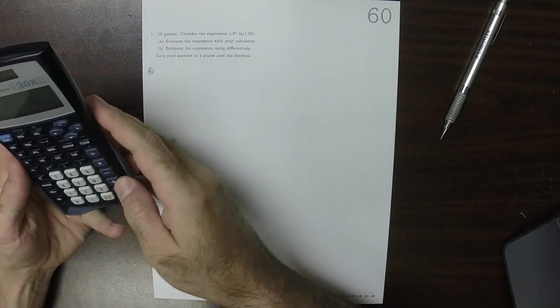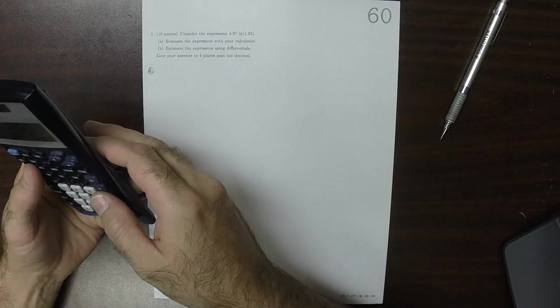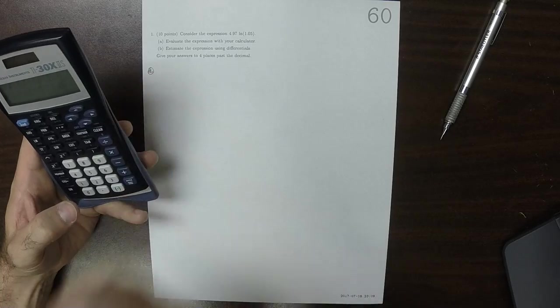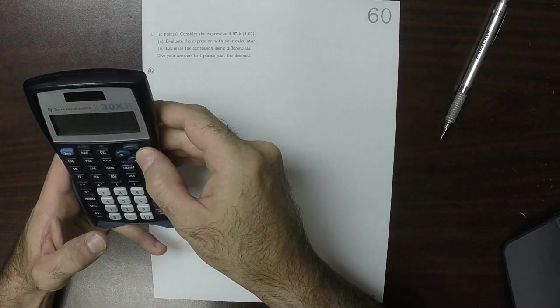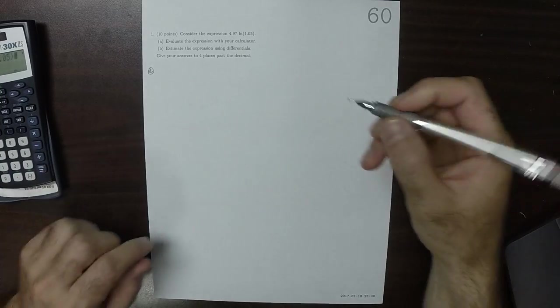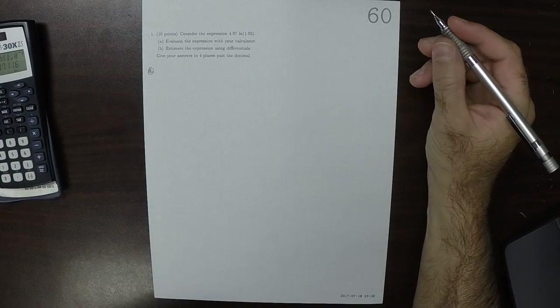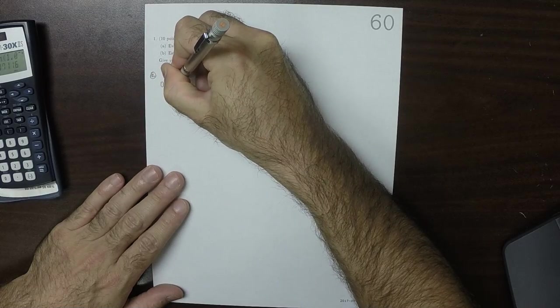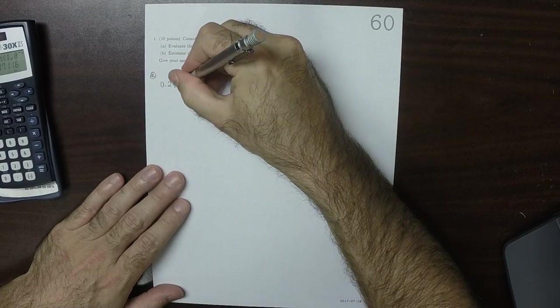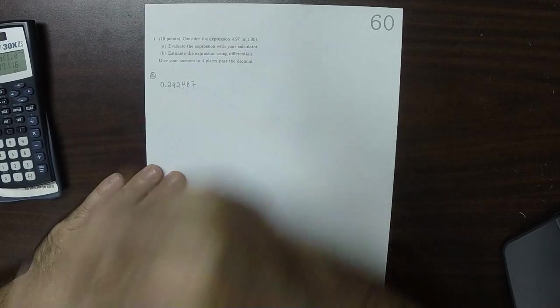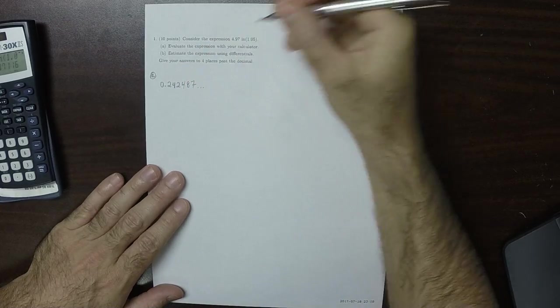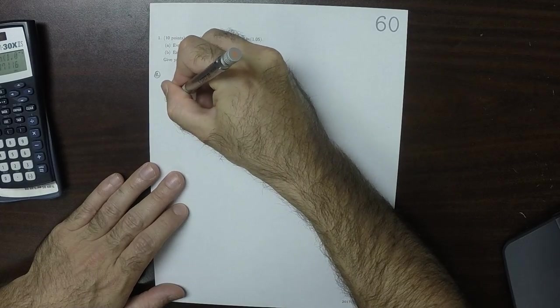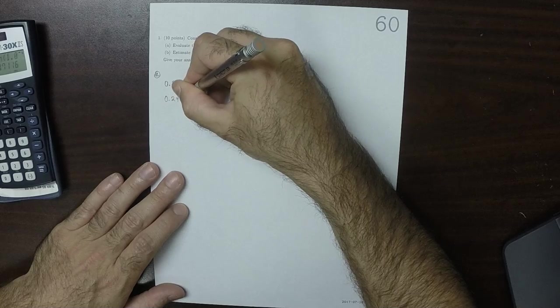4.97 times the log of 1.05 is 0.242487 dot dot dot. So to four places past the decimal, that's 0.2425.